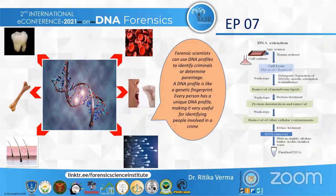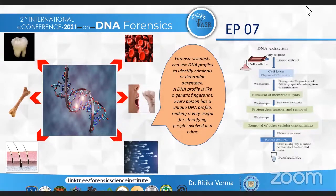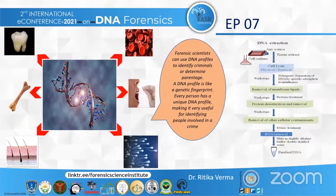The basic steps involved in all DNA procedures are: firstly, any source can be chosen for DNA extraction, which can include a cell culture, a tissue extract, or basic blood samples. The cells are then lysed by physical or chemical methods — physical methods include mechanical disruption, and chemical methods include the use of phenols. Cell debris is removed with detergents and centrifugation. Proteins are denatured and digested using a protease and precipitated with organic solvents such as phenols, then removed by centrifugation to yield purified DNA. Forensic scientists can use DNA profiles to identify criminals or determine parentage, as every person has a unique DNA profile, making it useful for identifying people involved in a crime.